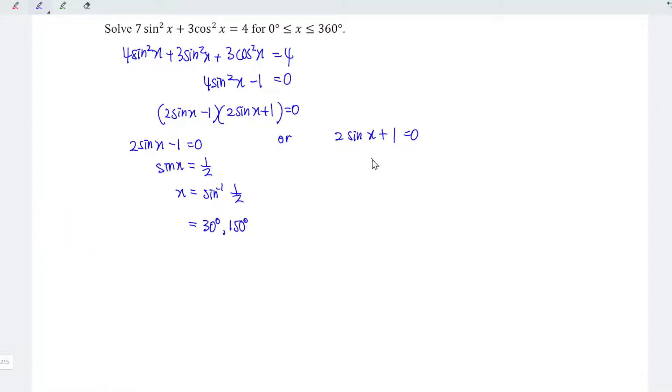Next, let's solve for the second equation. We have sin x is equal to negative 1 over 2. So which means that x is equal to arc sin negative 1 over 2. Again, recall all sin tan cos all. This time, we should have the third and the fourth quadrant. And we know that arc sin 1 over 2 is 30 degrees.